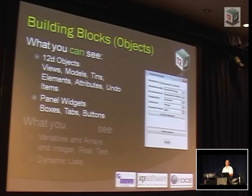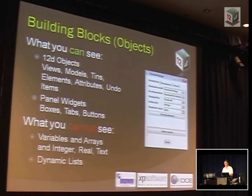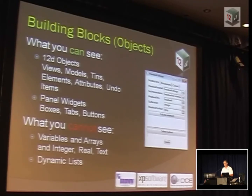The things you can't see — when you turn into a programmer, you have to take a look at these things. We have things called variables and arrays, and they're made up of integers and real numbers and lists. If you're a programmer, you're big on lists — we keep track of things that we have to go through. Those are some of the building blocks we're going to use when we put together our first macro.